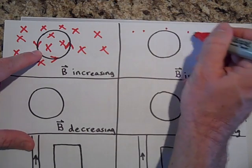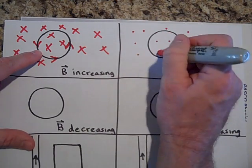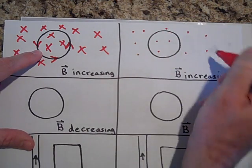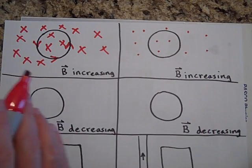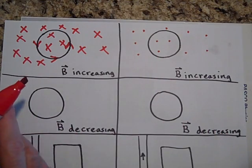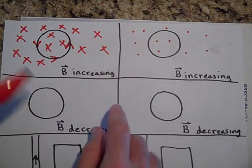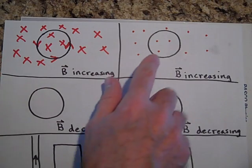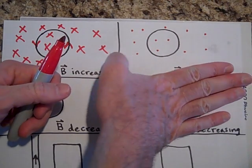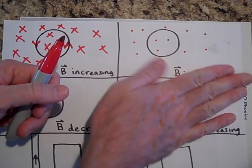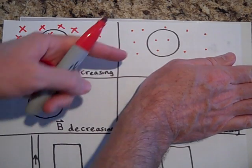Now let's do that with dots. We've got a bunch of dots. If the dots are increasing, then the hoop is going to try to make x's because it doesn't want the field to change. If I didn't tell you it was increasing or decreasing, you wouldn't know what's happening.